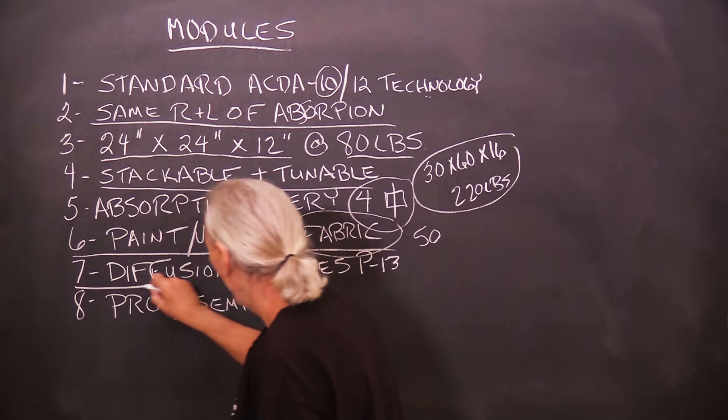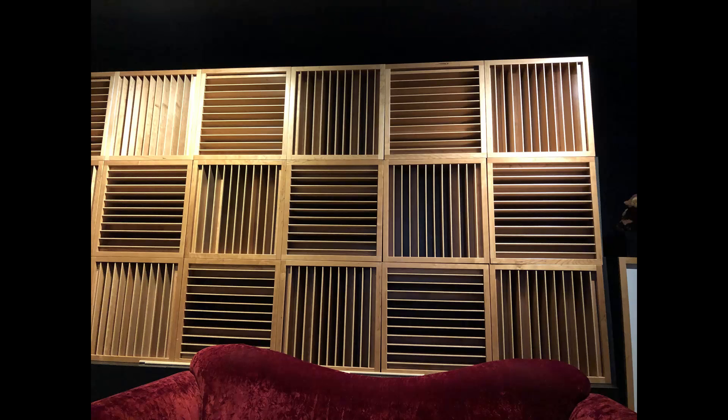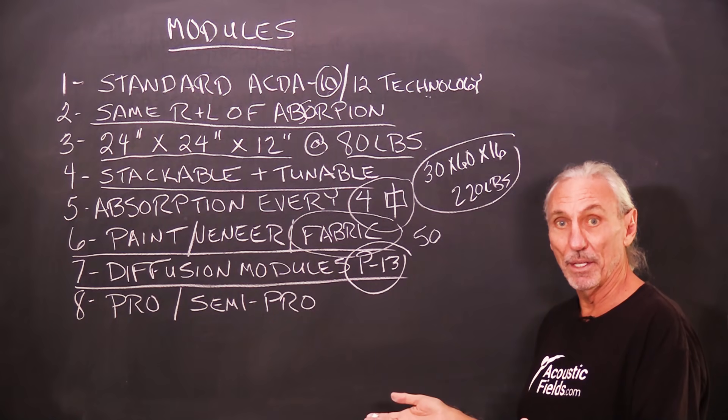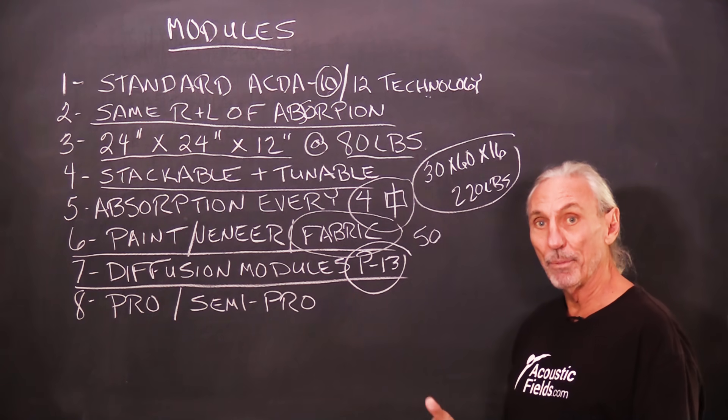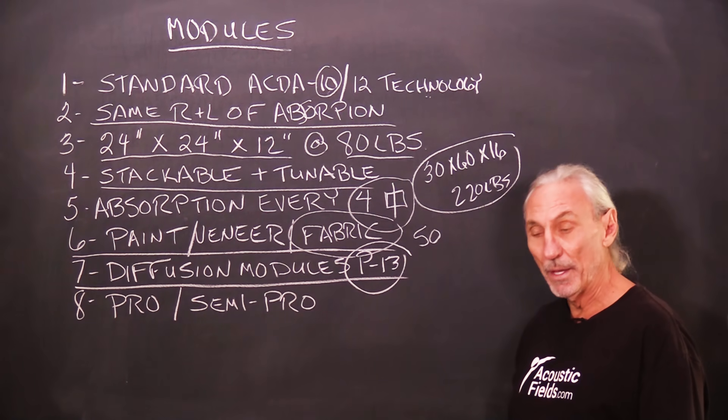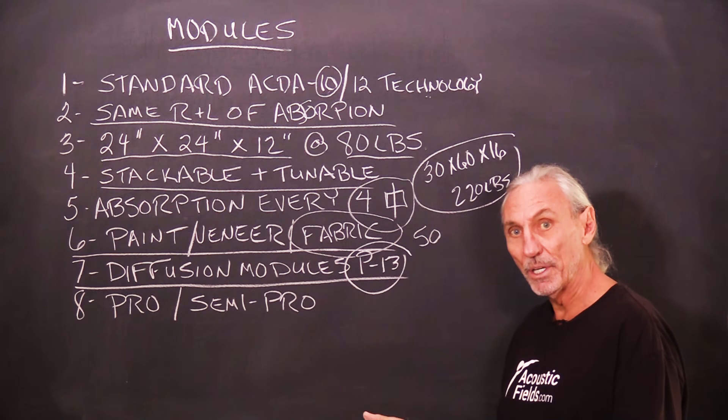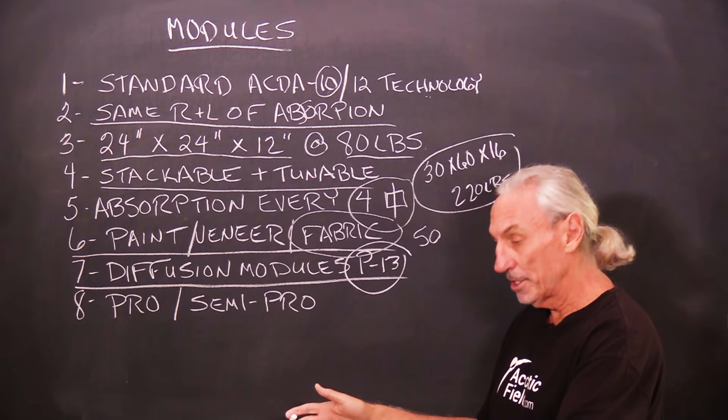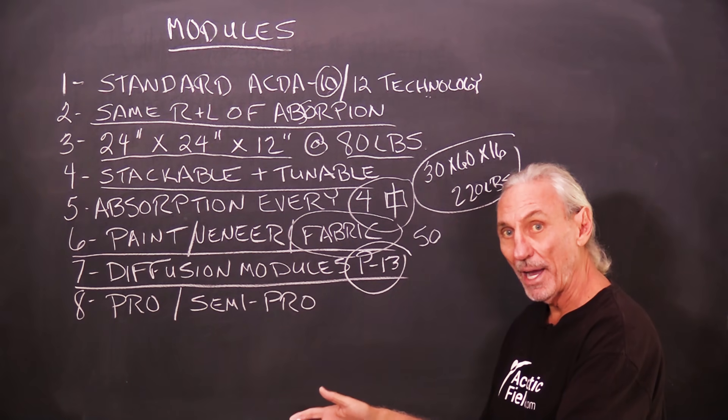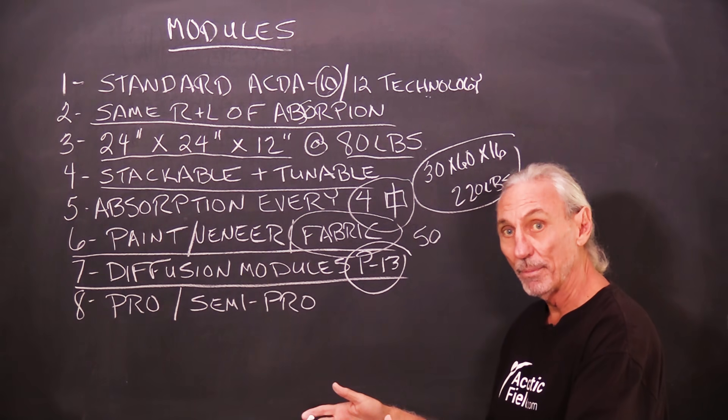Now we also have the P13 diffusion modules, same size, 24, 24, 12. So now you have a building system with bricks, basically. Bricks that have the proper rate and level of absorption. So you can go into a wall surface area, know that for this three feet in that surface area I got a 40 cycle problem and it's big. It's plus 12.